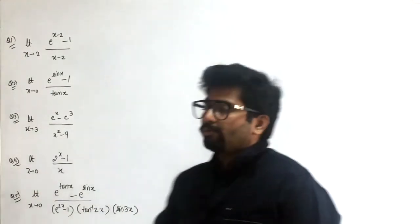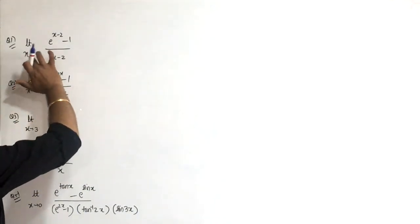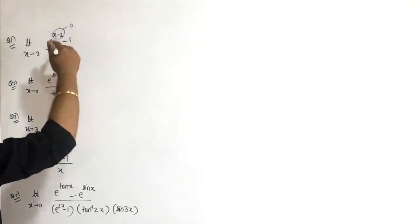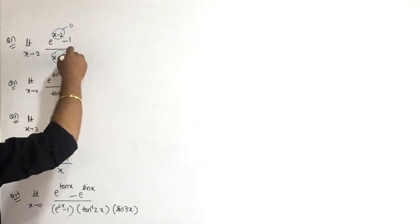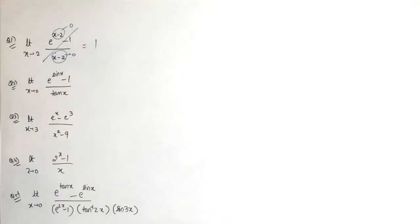Let's see the first question: limit x approaches 2 of e to the power x minus 2, minus 1, upon x minus 2. When x approaches 2, the story approaches 0, and bottom also has the same story approaching 0. So this expression equals 1.